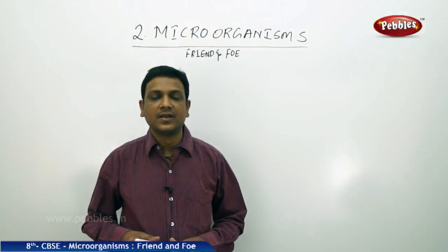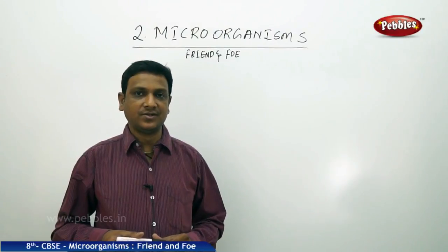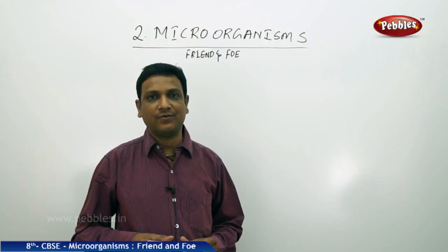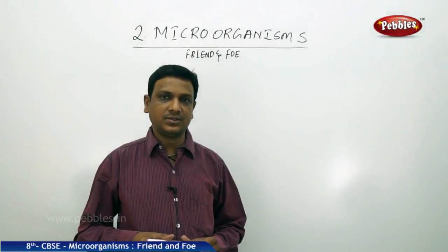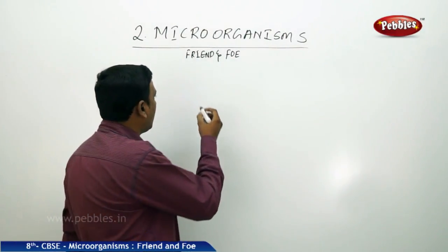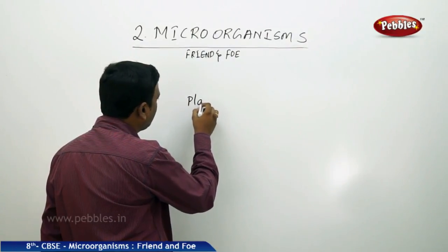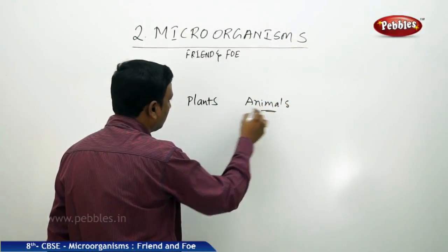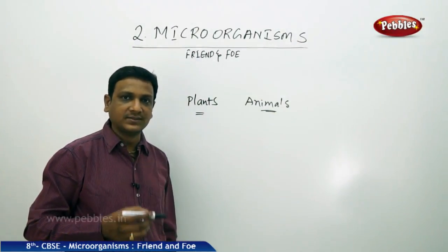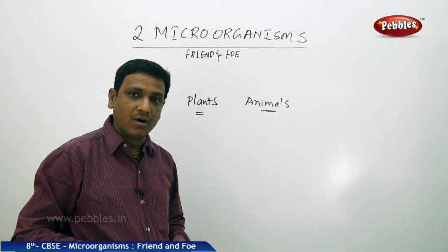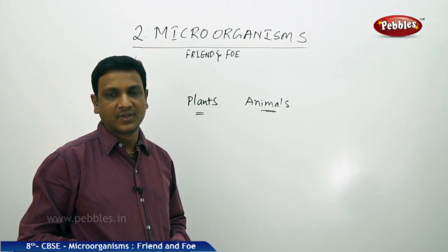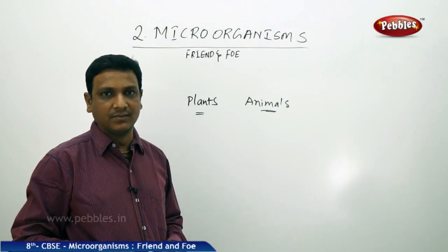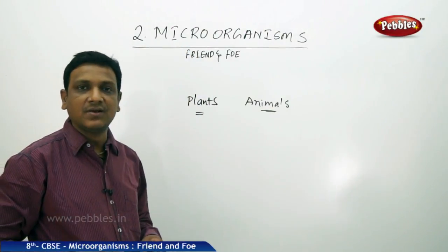Good morning children. Today we are discussing the second chapter in our biology - microorganisms: friend and foe. We have studied that living organisms are basically of two kinds: plants and animals. Apart from these, there are other kinds of organisms which we cannot see with our naked eye because they are very small in size. We call such small organisms as microorganisms - micro meaning very small.